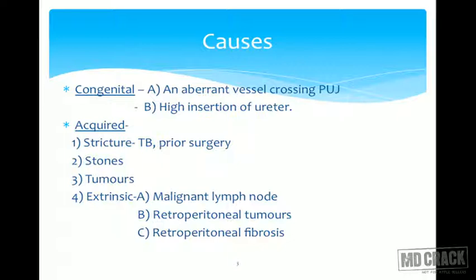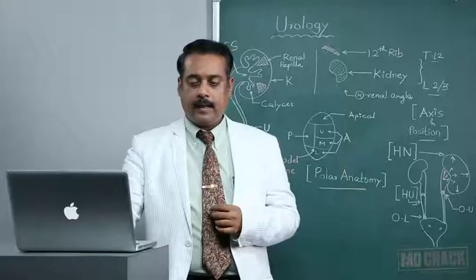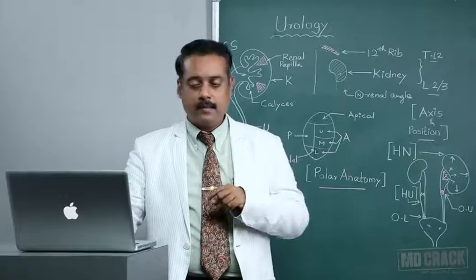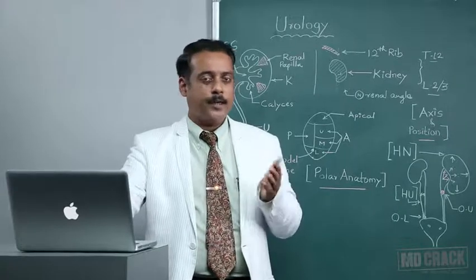Acquired causes can be various pathological and neoplastic. The commonest acquired cause is stricture, which can be due to tuberculosis, prior instrumentation, or prior surgery. Commonly we also see renal stones or impacted stones causing back pressure. It is also seen due to tumor infiltration and extrinsic factors such as malignant lymph nodes causing localized fibrosis around the ureter, giving rise to blockage and back pressure. Retroperitoneal tumors expanding and engulfing both ureters, and retroperitoneal fibrosis — Ormond's disease — which can be either idiopathic or neoplastic.